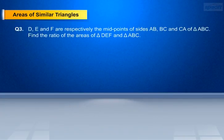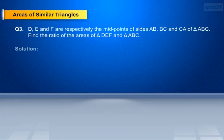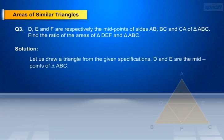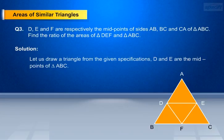Question 3: D, E, and F are respectively the midpoints of sides AB, BC, and CA of triangle ABC. Find the ratio of the areas of triangle DEF and triangle ABC. Solution. Let us draw a triangle from the given specifications. D, E, and F are the midpoints of triangle ABC. Therefore, DE is parallel to AC and DE equals 1/2 AC.